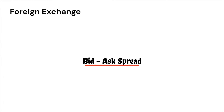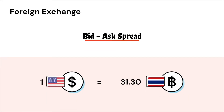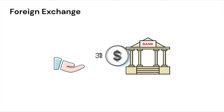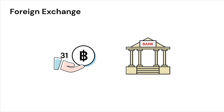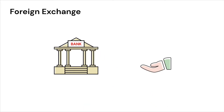For example, let us say the US dollar to Thai Baht exchange rate is 31.3. If a person wants to buy Thai Baht in exchange for the US dollars she has, the bank will sell the Thai Baht to her at say 31 Thai Baht per US dollar. So she pays one US dollar to the bank and gets 31 Thai Baht.